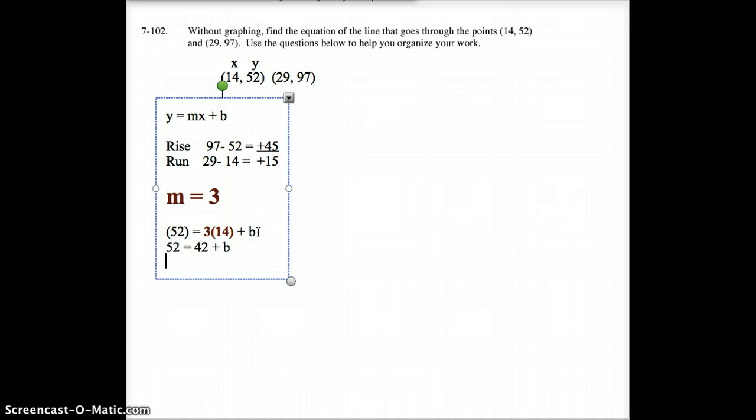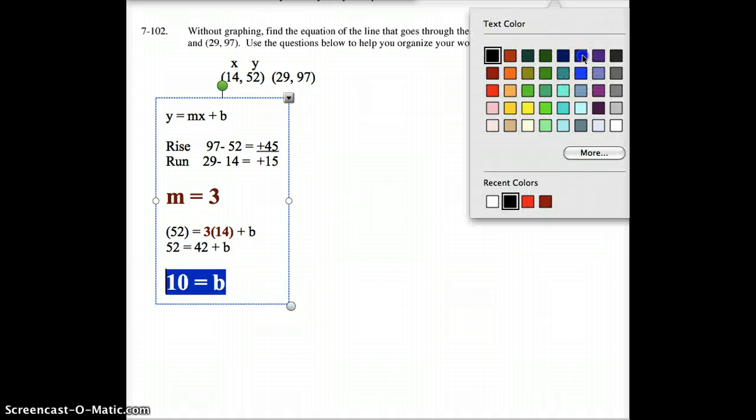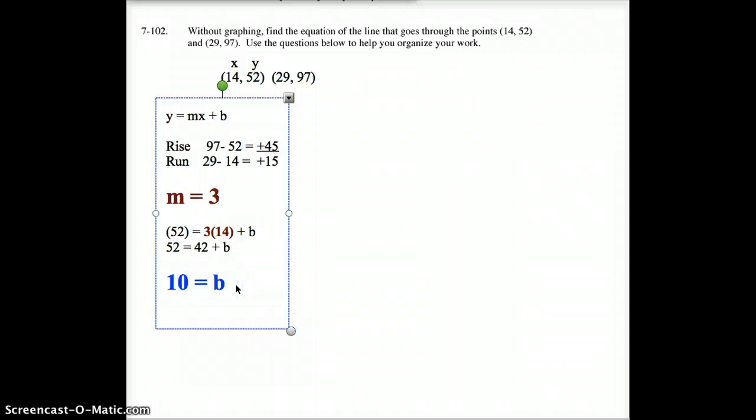As I subtract 42 from both sides, I get 10 equals b. Now that we got that, my equation now reads like this. y equals 3x plus b. Oh, my b. What kind of dork am I? b is 10. We just figured that out. So, y equals 3x plus 10.